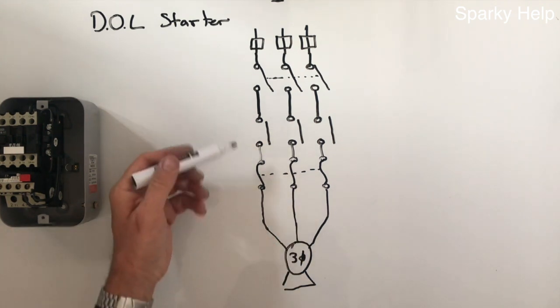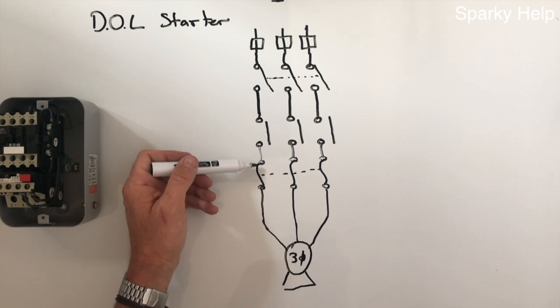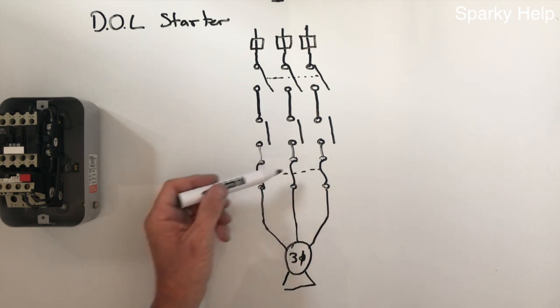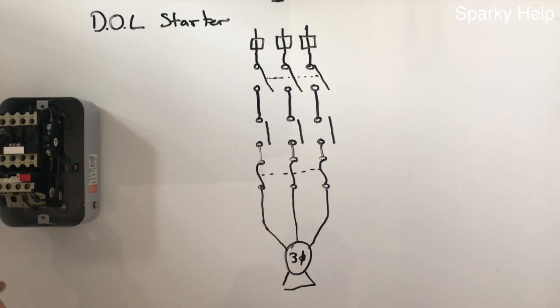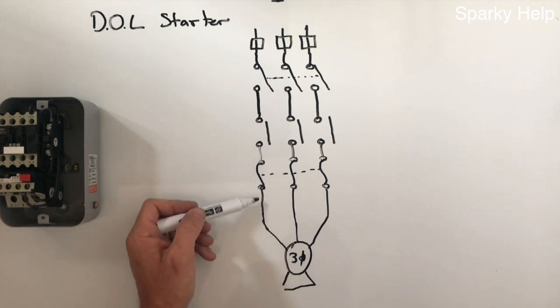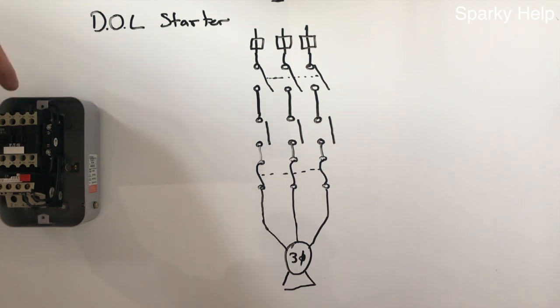So contactor comes through the other side and these S-shaped things, these are your overloads. So that's this bit here and then on the other side of the overload it goes straight to your motor. So direct through. So power supply comes in the top. Your load side comes out the bottom.